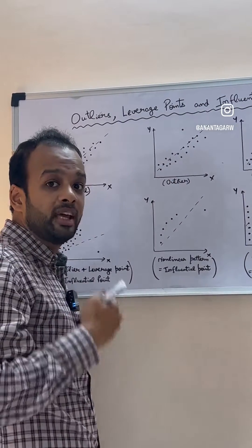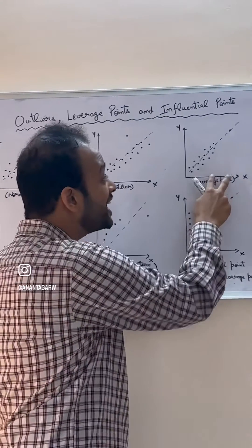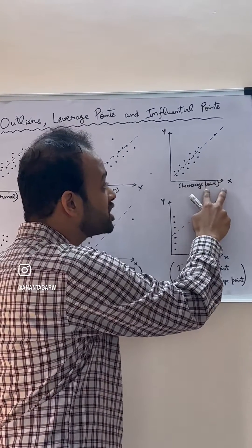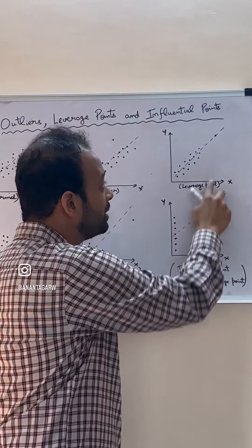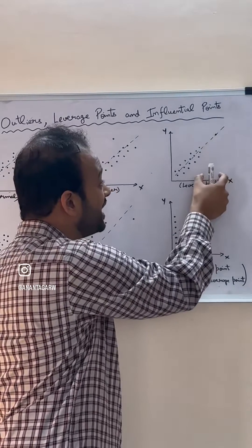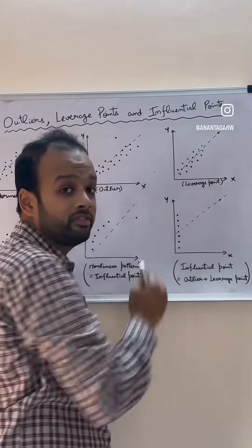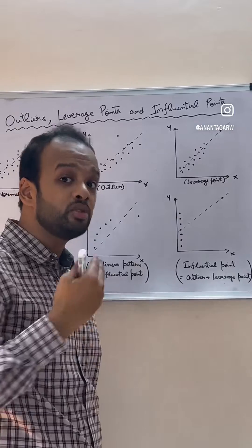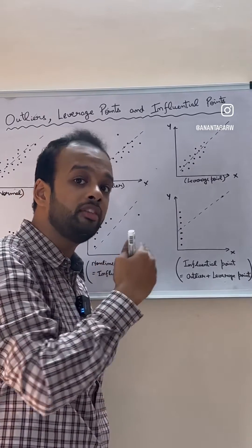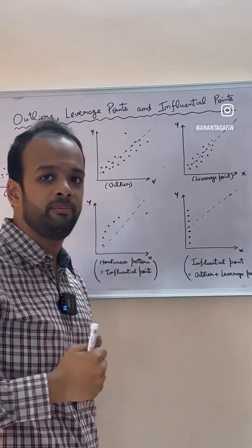Now, there is another case where a point can have a very high x value. This is a leverage point. Because this extreme point has a very high x value compared to the rest of the dataset. It is not an outlier because it is falling on the regression line — it doesn't have a high residual at all.